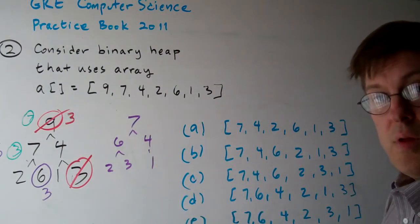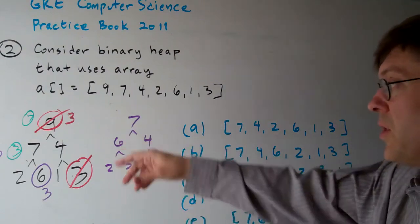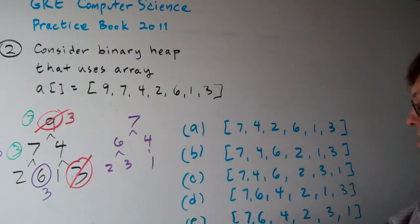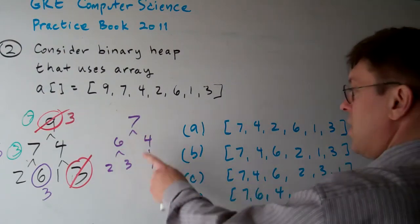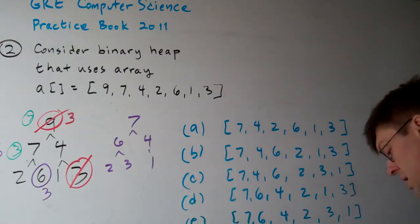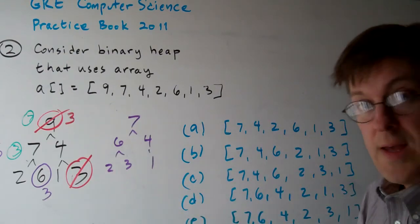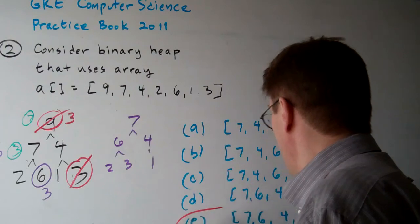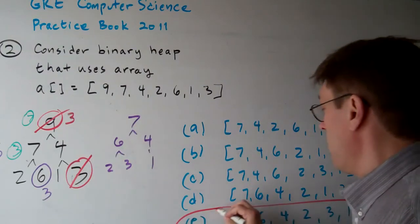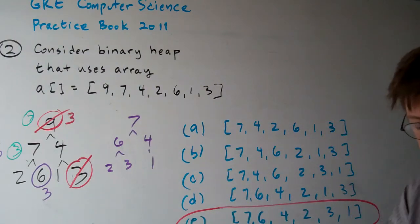That's the max heap with the maximum number of the prior one deleted out of it. So you have seven, six, four, two, three, one. So the answer is E.